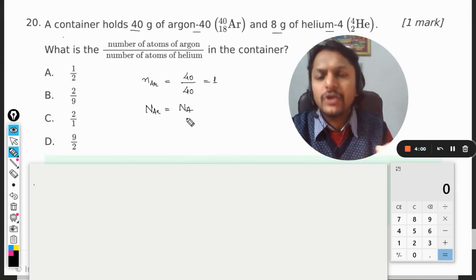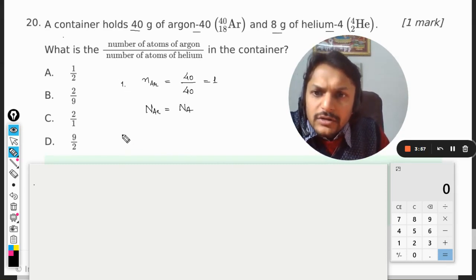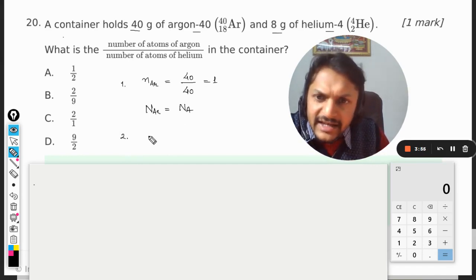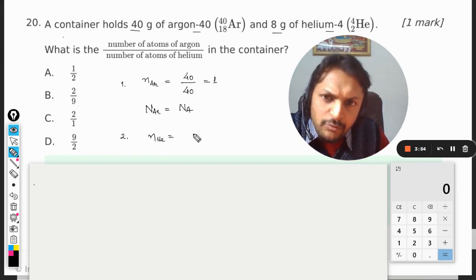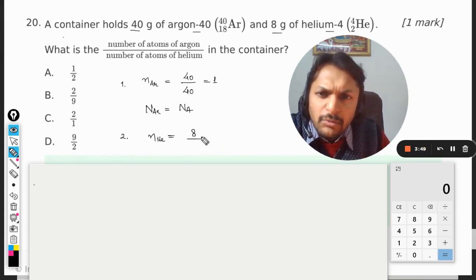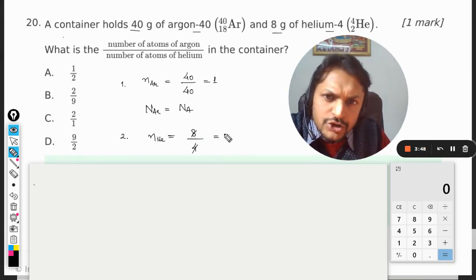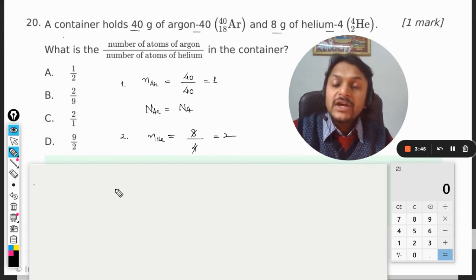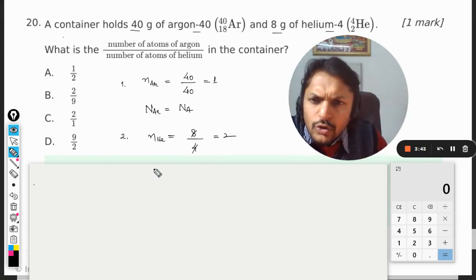Now for the second gas, that is helium, I can say that number of moles can be found by the mass, 8 grams, divided by the molecular mass, which is 4. So it comes out to be equal to 2. So there are 2 moles. How many number of molecules of helium are there? Obviously twice the Avogadro's number.